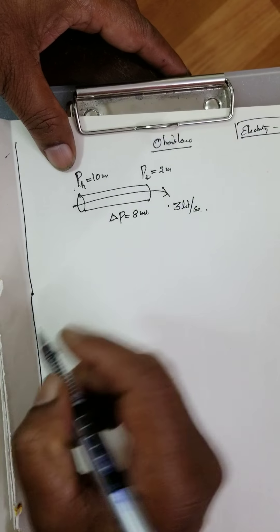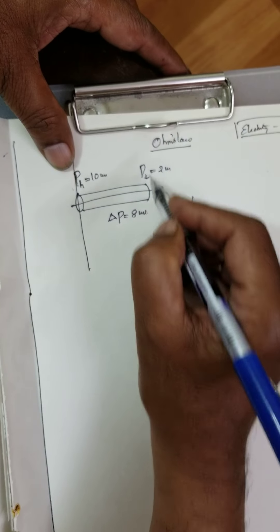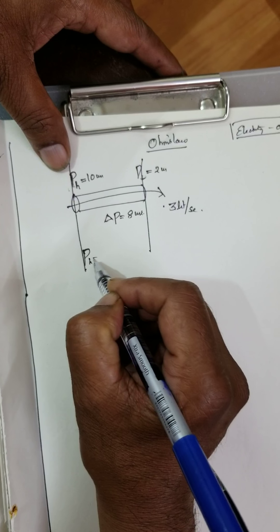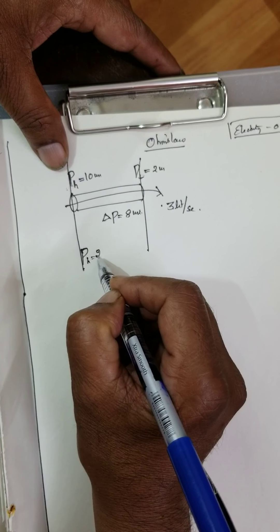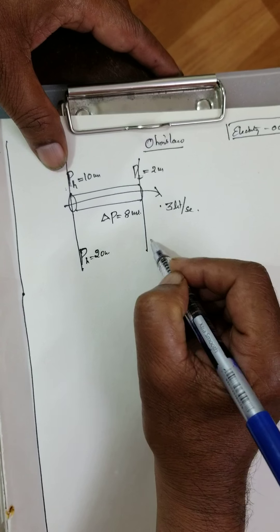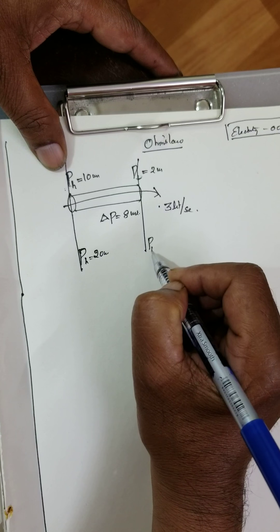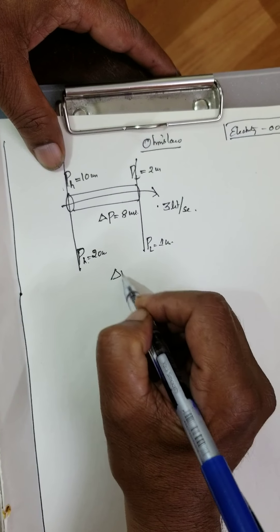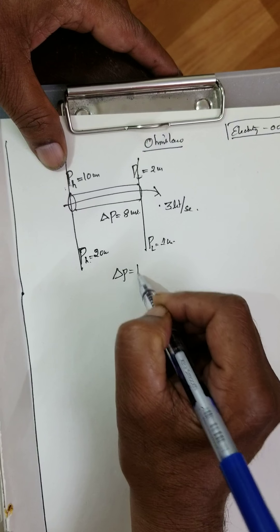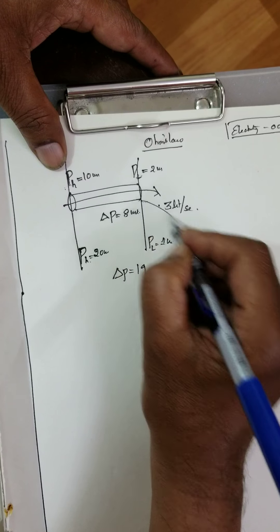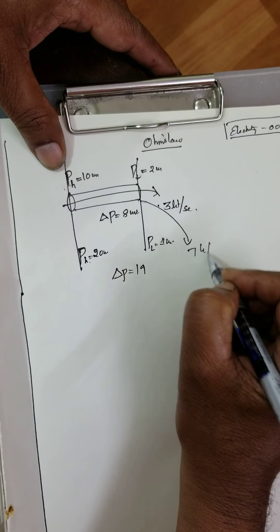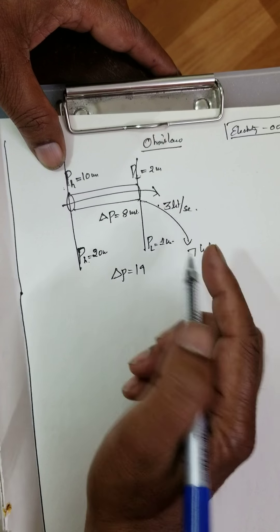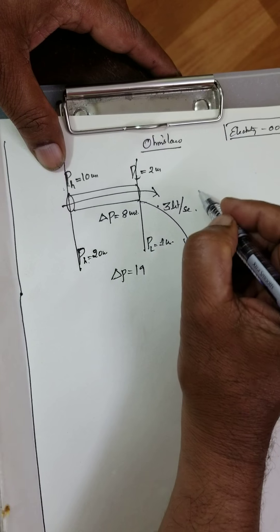Now if we increase the pressure difference — say here the pressure is equal to 20 units and here it is equal to 1 unit — what is the pressure difference? The pressure difference is equal to 19 units. Then more water, about 7 liters per second, comes out.